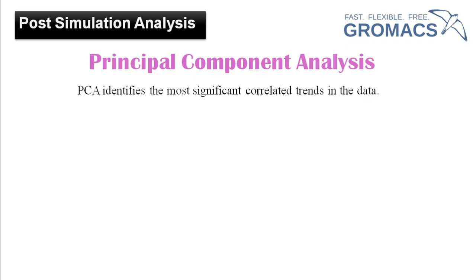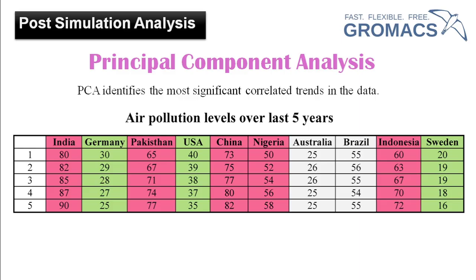PCA identifies the most significant correlated trends in the data. Let's take an example — suppose this is the data of air pollution level of 10 countries over the last five years. At first glance this data looks complex, but if you look carefully you will find that in India, Pakistan, China, Nigeria and Indonesia the pollution level is gradually increasing over the years.